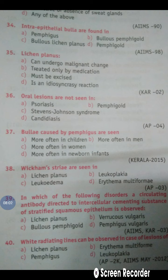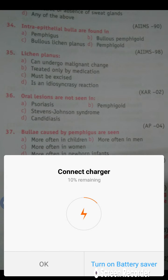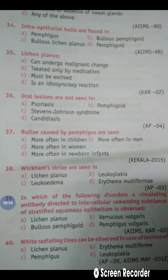Question number 40: White radiating lines are observed in the case of which condition? As I told you, white radiating lines are Wickham Striae, and Wickham Striae — white radiating lines — are observed in the case of Lichen Planus. That's why option A is correct — Lichen Planus.